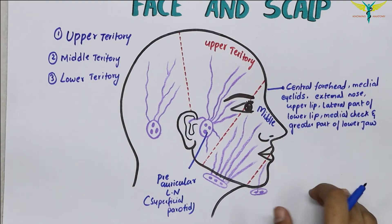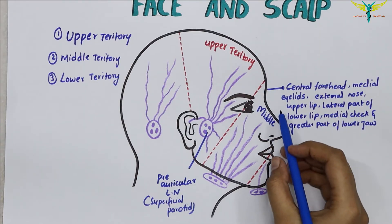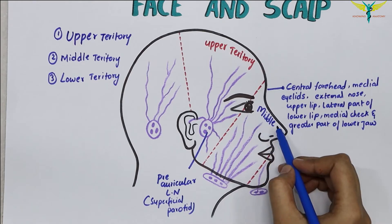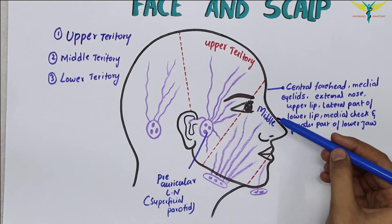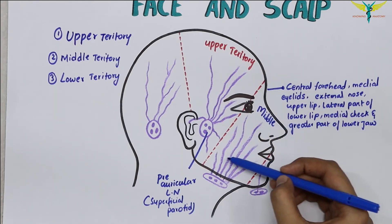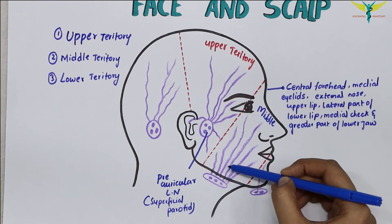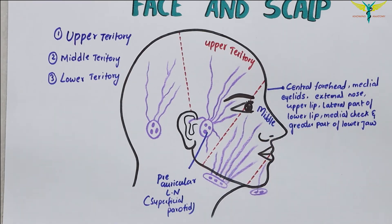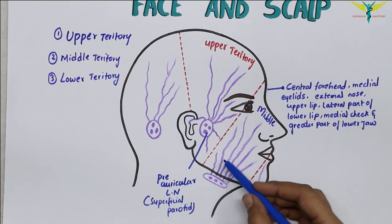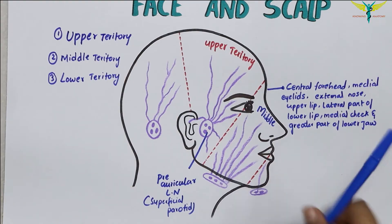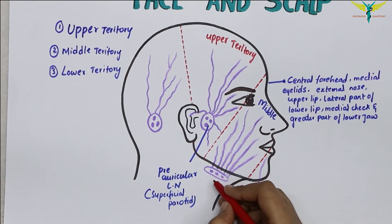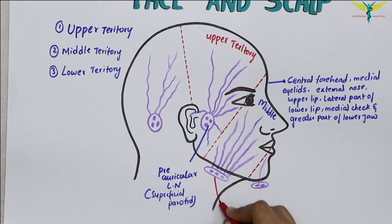The lymph from the middle territory is drained into the submandibular lymph nodes, as they lie below the mandible. So these are the submandibular lymph nodes.